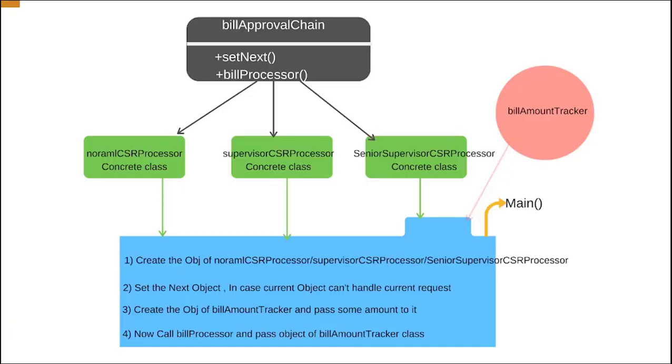I am going to build a reimbursement system where an employee requests an amount to reimburse and a CSR approves it based on their limit. A normal CSR can approve less than $10, a supervisor CSR less than $100, and if more than $100, the request goes to the senior supervisor CSR. I will implement this using the chain of responsibility design pattern.